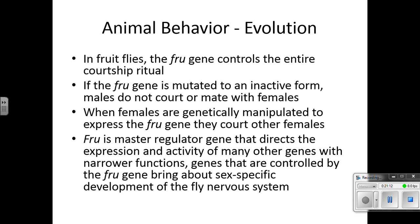In fruit flies, the fruitless gene controls the entire courtship ritual. When this gene is mutated to an inactive form, males do not court or mate with females. When females are genetically manipulated to express this gene, they court other females. The fruitless gene is a master regulatory gene that directs the expression and activity of many other genes, and genes controlled by it bring about sex-specific development in the fruit fly nervous system.